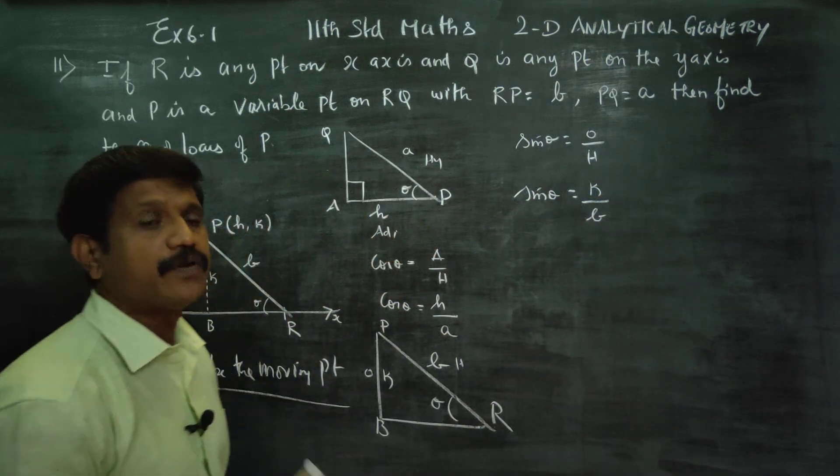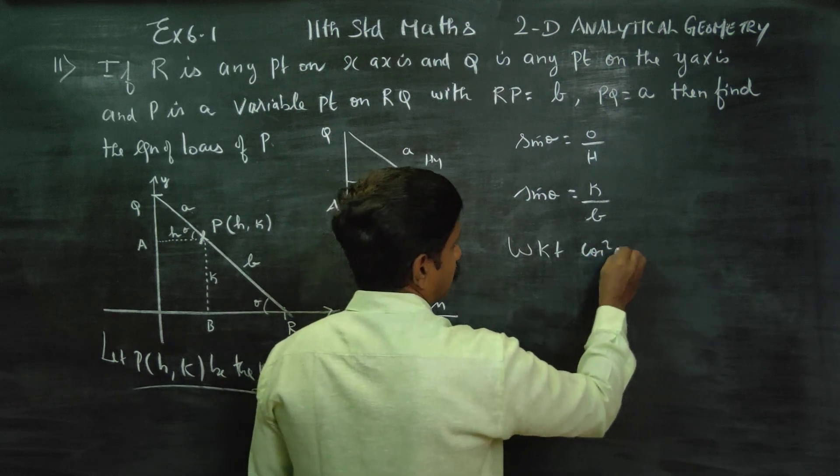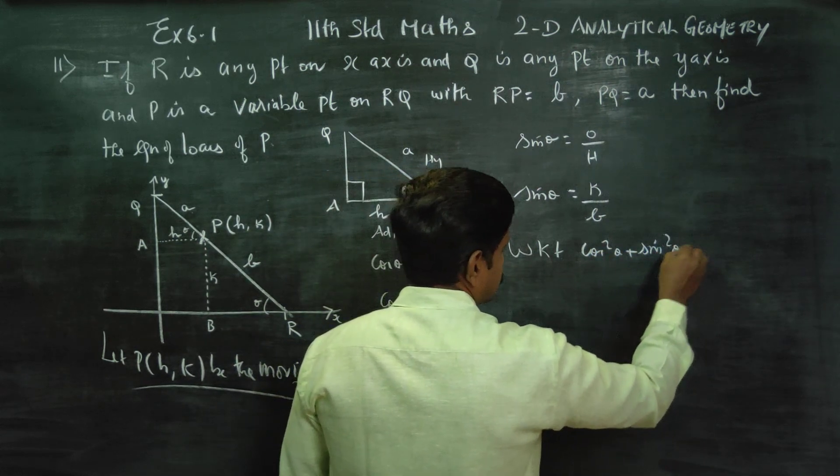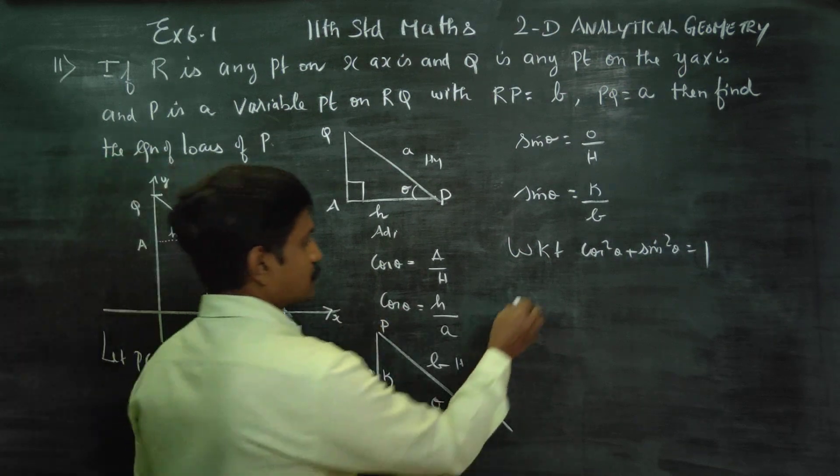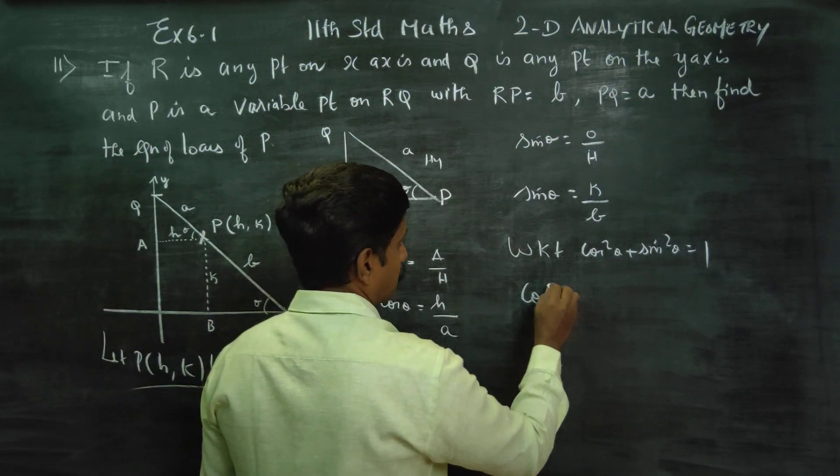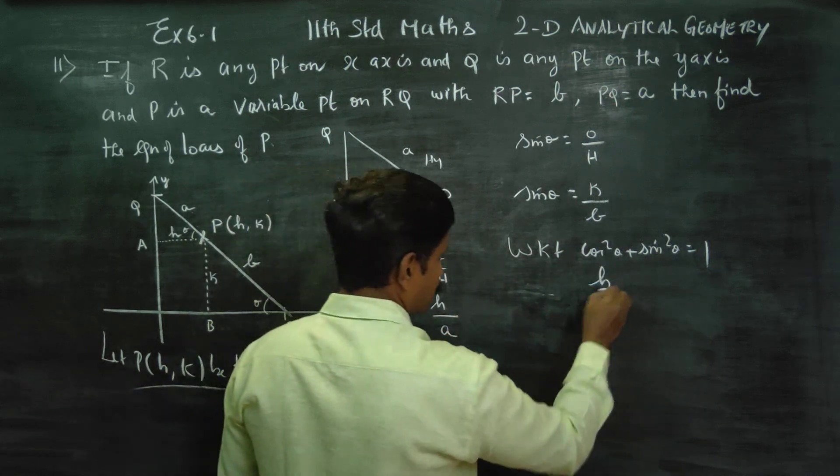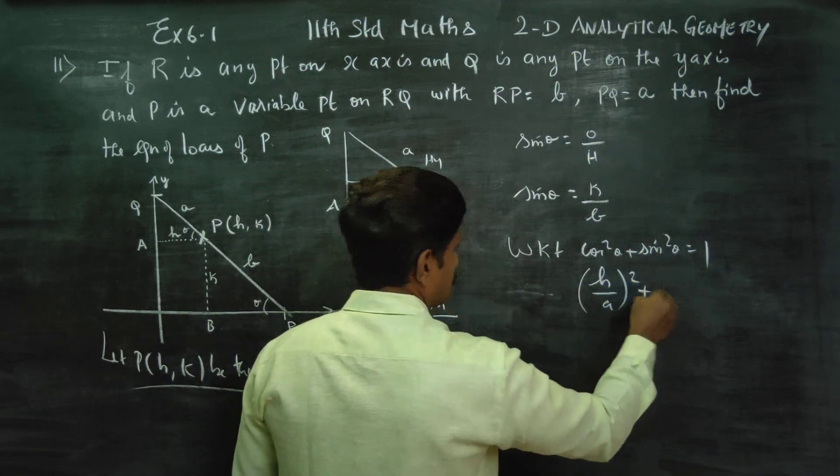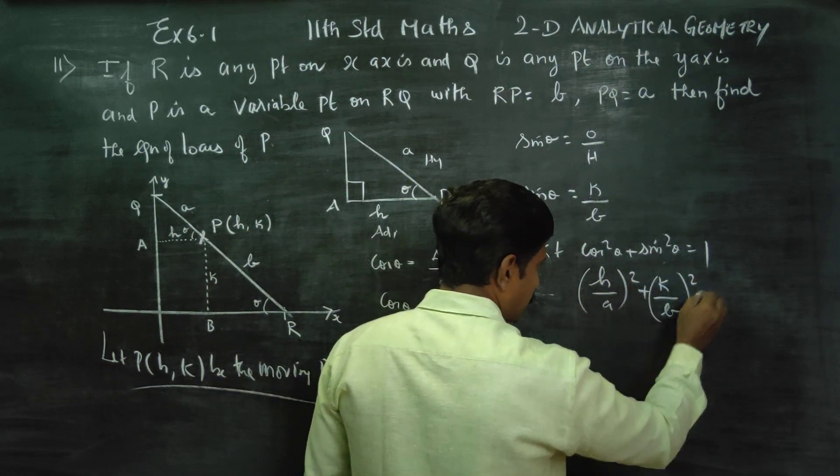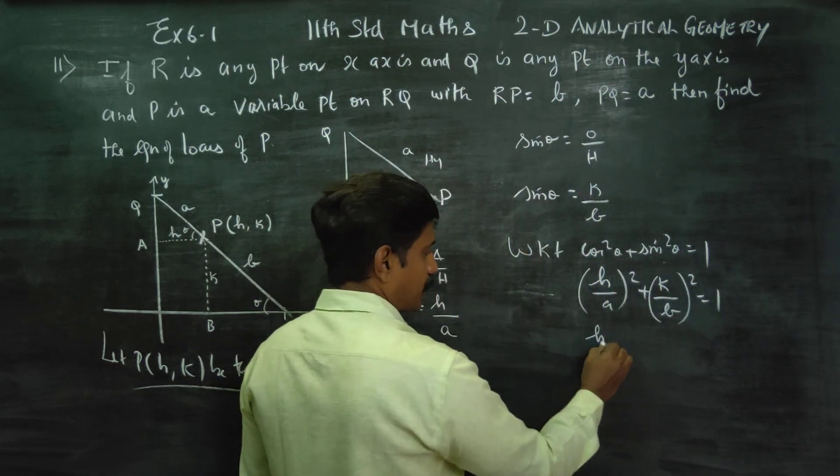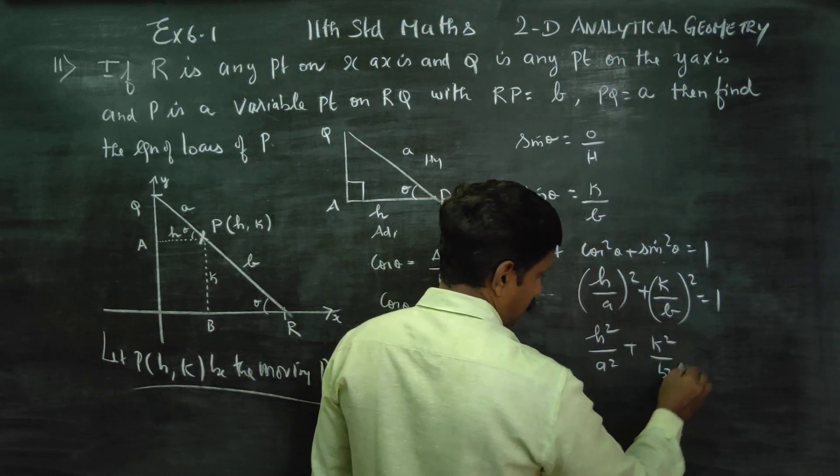We know that cos square theta plus sin square theta is equal to one. Using this identity: cos theta is H by A, squared, plus sin theta is K by B, squared, equals one. So H square by A square plus K square by B square is equal to one.